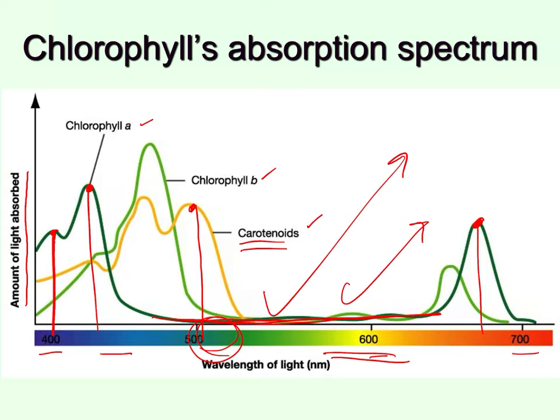The overall idea is that every color you see in the world is because of pigments. There are all kinds of pigments — even the pigments in paint give it color. Pigments absorb different wavelengths of light; any wavelength they do not absorb gets reflected, and that reflection hits your eye — that is the color you see.